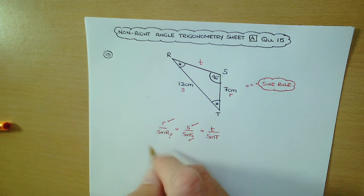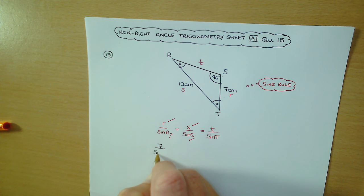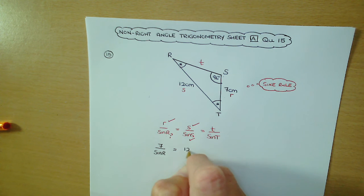So sub in the information. R is 7, that's over sine R, and then that's equal to S is 12, and that's over sine S. That's sine of 96 degrees.